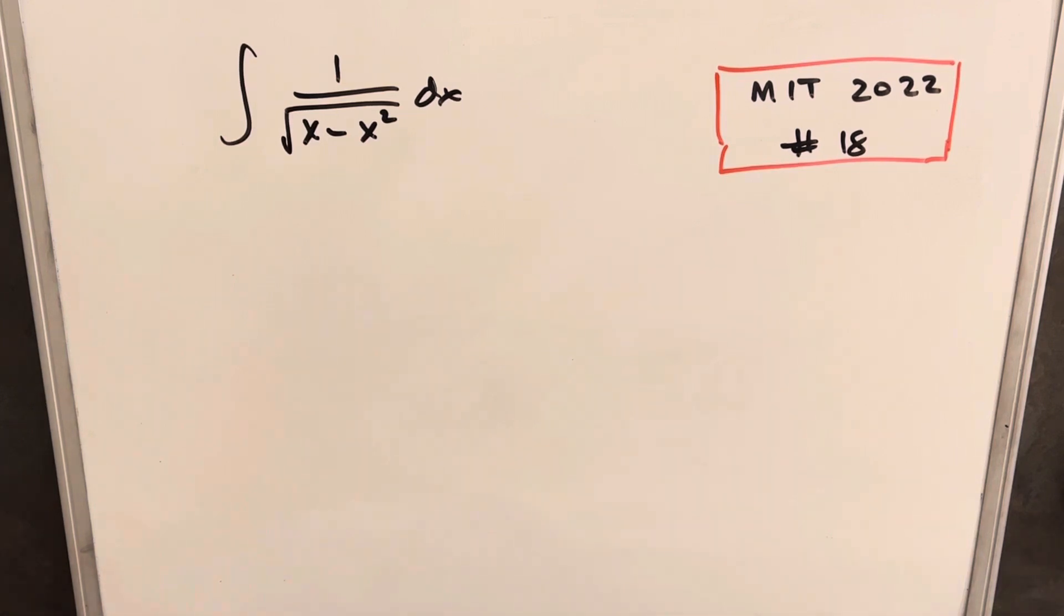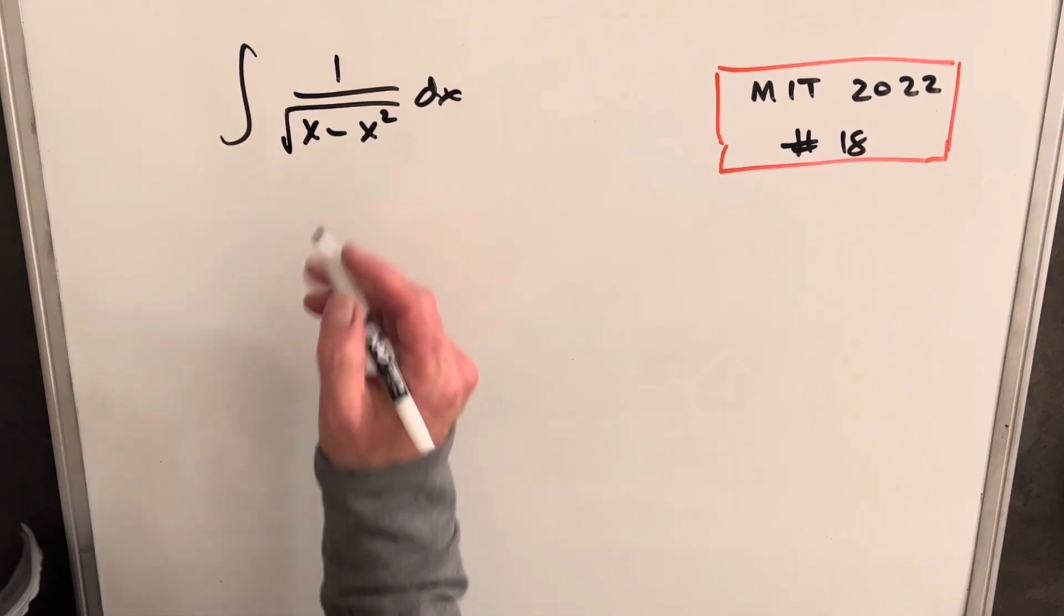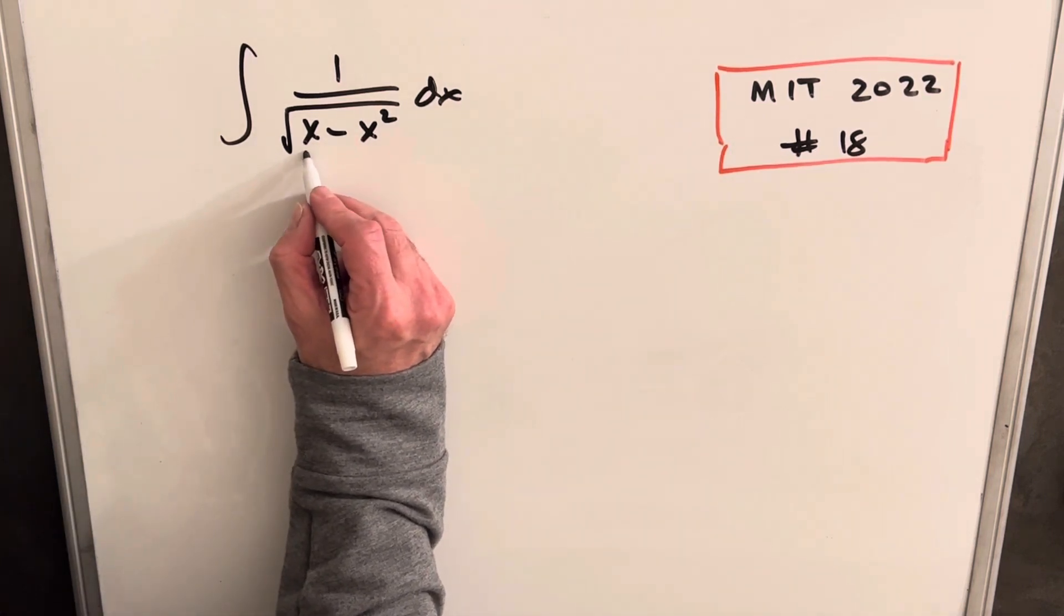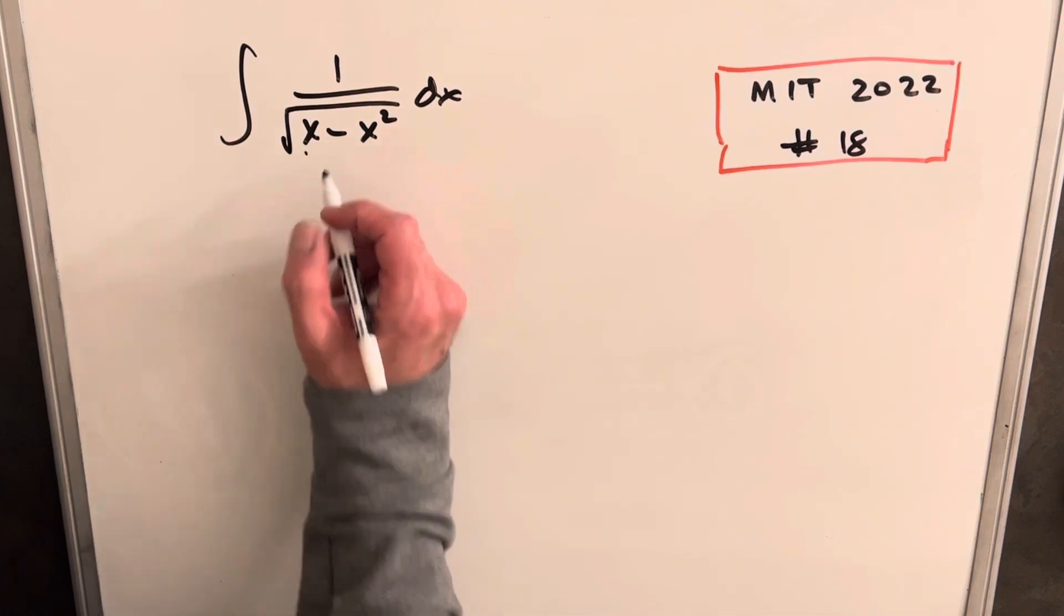So let's get started with this. We have the integral of 1 over square root of x minus x squared dx. It's usually a problem when we have two x terms within the radical. We like to have just one.